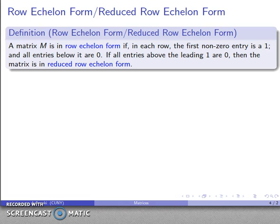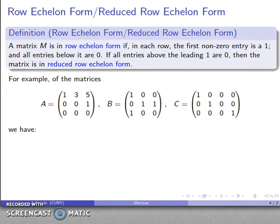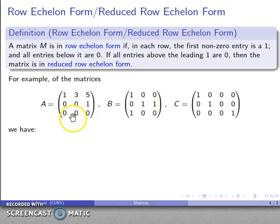A useful form for a matrix is row echelon form or reduced row echelon form. The matrix is in row echelon form if in each row the first non-zero entry is a one and everything below that entry is zero. Matrix A's first non-zero entry is a one with zeros below it in each row, and the third row has no non-zero entry, so trivially the condition is satisfied. So matrix A is in row echelon form.